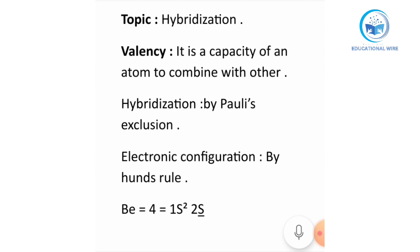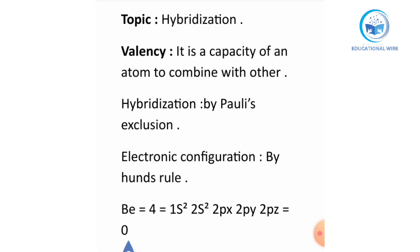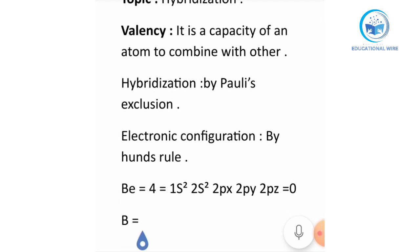We are making its electronic configuration: 1s2, then 2s2, then 2px, 2py, 2pz. According to this, it says that beryllium has zero valence electrons — its electronic configuration gives zero. But according to hybridization, this result from Hund's rule was wrong.